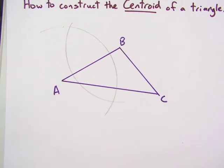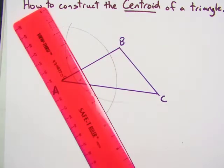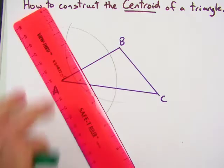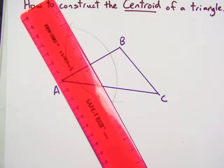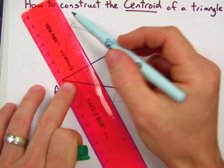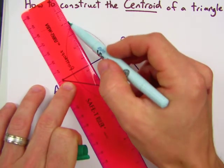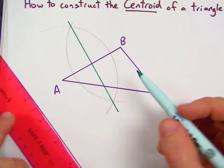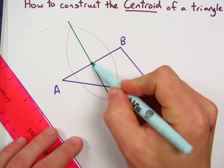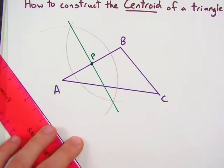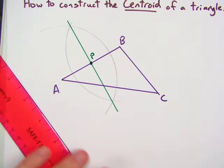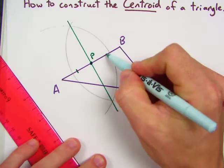Then we want to draw the line through the two intersections of our arc. We'll just call this point P. So we know that P is the midpoint of AB.